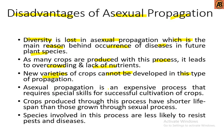Asexual propagation is an expensive process that requires special skills for successful cultivation of crops. Crops produced through this process have a shorter lifespan than those grown through sexual propagation. Species involved in this process are also less likely to resist pests and diseases.